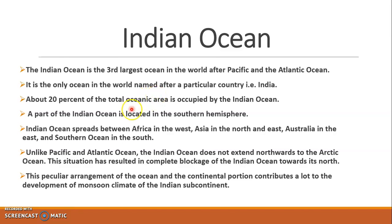About 20% of the total oceanic area is occupied by the Indian Ocean. A part of the Indian Ocean is located in the southern hemisphere. The Indian Ocean spreads between Africa in the west, Asia in the north and east, Australia in the east, and the Southern Ocean in the south.